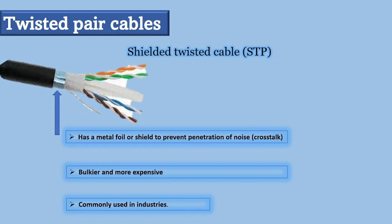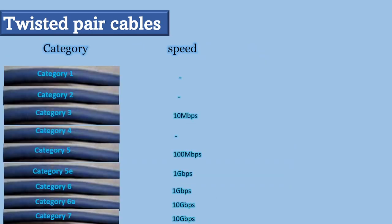Generally, twisted pair cables are classified by category — category 1 up to 7, or cat 1 up to cat 7. These categories are based on the maximum speed they can handle free of crosstalk. As you can see, the speeds associated with each category start from the lowest speed at cat 3, all the way up to cat 7, running at different ranges.